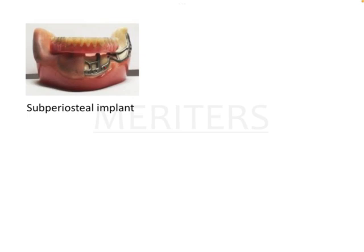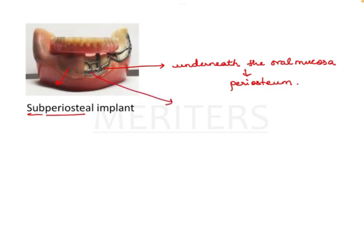For your knowledge, in case a similar question is asked — this is a subperiosteal implant. As you can see, the mucosa is here and just underneath the oral mucosa is the periosteum. Subperiosteal implants take support from the periosteum and are like a mesh — a cast mesh in titanium that supports the superstructure. This design is also no longer used. We need to know all three designs — transosseous, endosseous, and subperiosteal — to answer image-based exam questions.